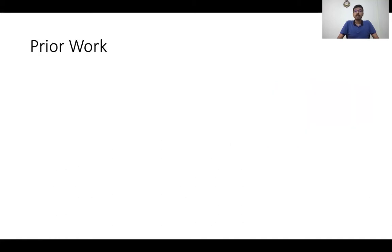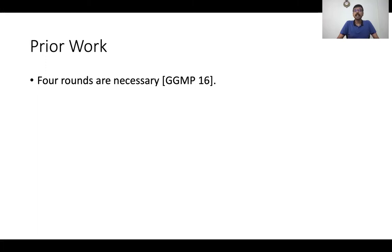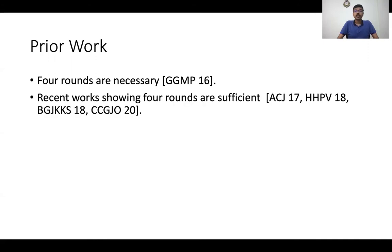Let me briefly summarize the prior work in constructing round-efficient multiparty computation protocols in the plain model. The work of Garg et al. from Eurocrypt 2016 showed that four rounds are necessary to construct secure multiparty computation protocols in the plain model against malicious adversaries, and this lower bound holds even when considering black box as well as non-black box protocols. A sequence of recent exciting works have shown that four rounds are sufficient for constructing MPC against malicious adversaries in the plain model. Unfortunately, all these protocols make non-black box use of cryptographic primitives and hence have a prohibitively high computational cost.